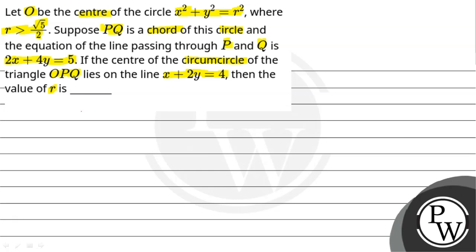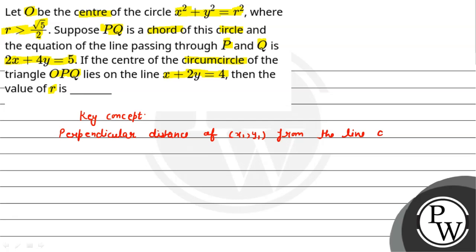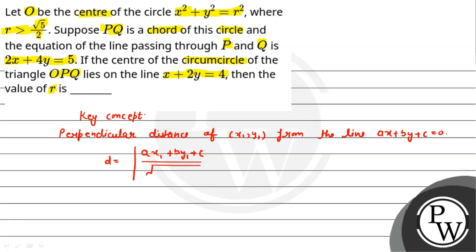So first of all, the key concept we need is: what is the perpendicular distance formula? If we have a point (x₁, y₁) and a line with equation ax + by + c = 0, then the perpendicular distance d is equal to |ax₁ + by₁ + c| divided by √(a² + b²). This is our perpendicular distance formula and this is our first key point.